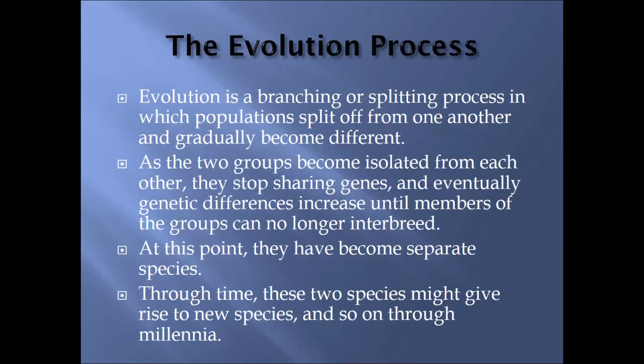Evolution is a branching or splitting process in which one population splits off of another and gradually becomes different. As the two groups become increasingly isolated from each other, they stop sharing genes. They no longer have the same gene pool, and as their gene pools become separate they eventually will see enough genetic differences to cause the members of the group to no longer be able to interbreed. It depends on the type of isolation and how many different pockets of varying environments exist.